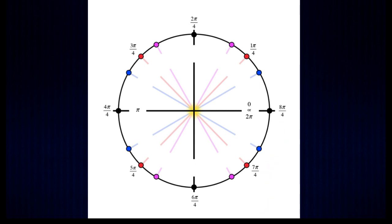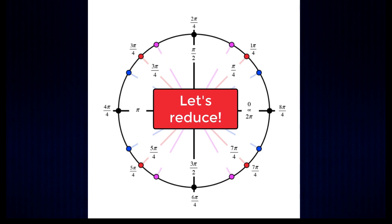And again these aren't reduced but after reducing them we get the pi over four angles that we're used to seeing in the unit circle. Let's go through the reducing process.